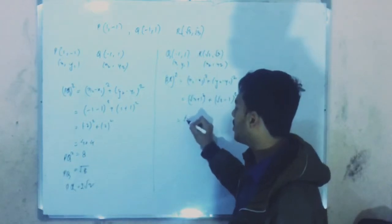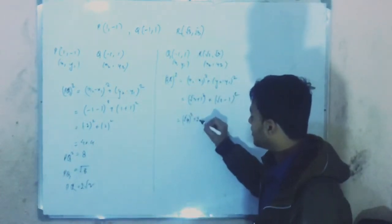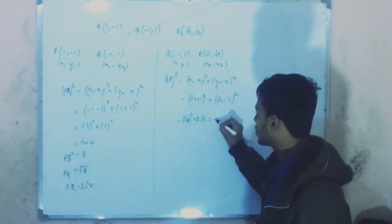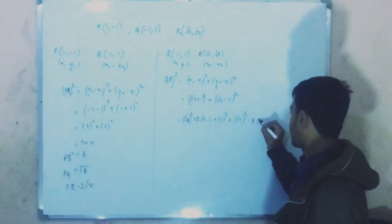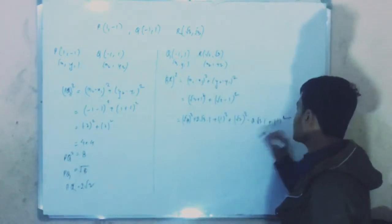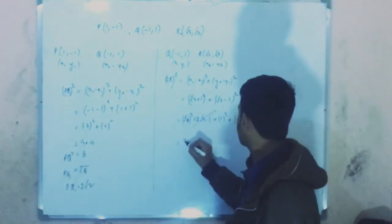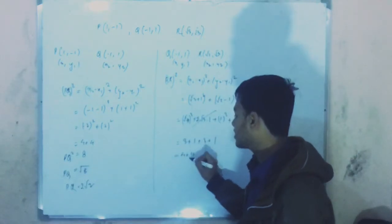Applying the formula, this is one of the most important questions so I will help you from the basic. This will be root 3 plus 1 squared plus root 3 minus 1 squared, which equals 3 plus 1 plus 2 root 3 plus 3 plus 1 minus 2 root 3. This equals 4 plus 4, which is 8.